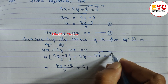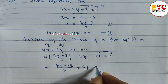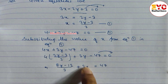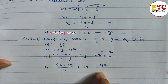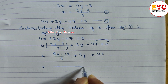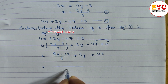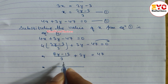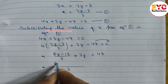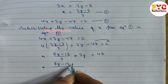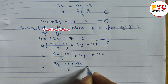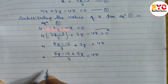The LCM is 3. Multiplying through, we get 8y minus 12 plus 9y minus 47 is equal to 0. So 8y plus 9y gives us 17y, and 17y minus 12 is equal to 47 into 3.